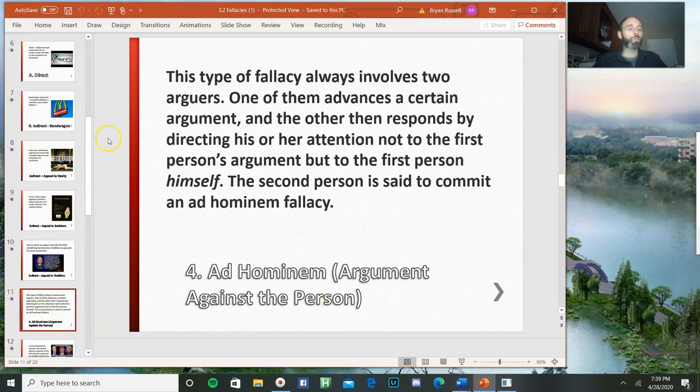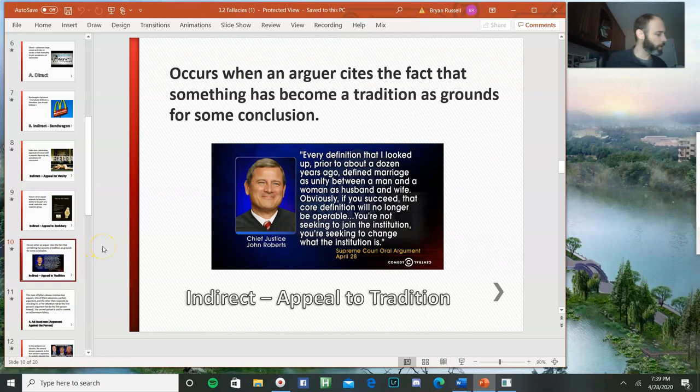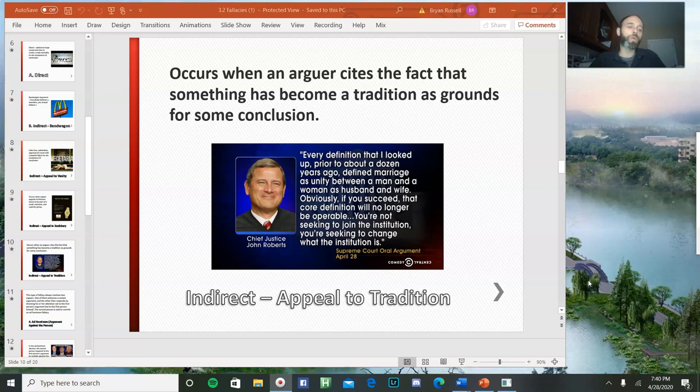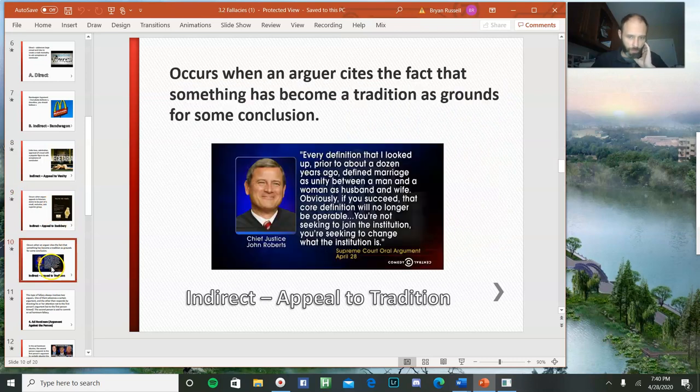So all the previous were varieties of appeal to the people. We got five. We got direct and then four varieties of indirect appeals to the people. And I missed one. So there are actually five indirect varieties of appeal to the people that the chapter covered. There are the four that we discussed: bandwagon, appeal to vanity, appeal to snobbery, appeal to tradition, and there's also appeal to fear.